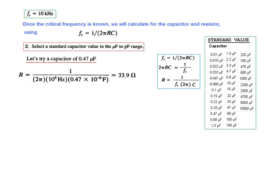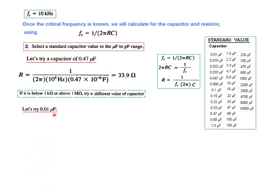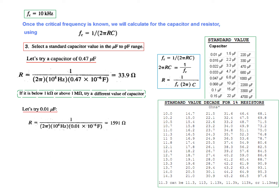The resistance value comes out to 33.9 Ω. However, as discussed, if R is below 1 kΩ or above 1 MΩ, we must try a different capacitor value. In this case, 33.9 Ω is less than 1 kΩ, so this capacitor is not suitable. We'll try a smaller capacitor — 0.01 µF — and with this value, R calculates to 1591 Ω.